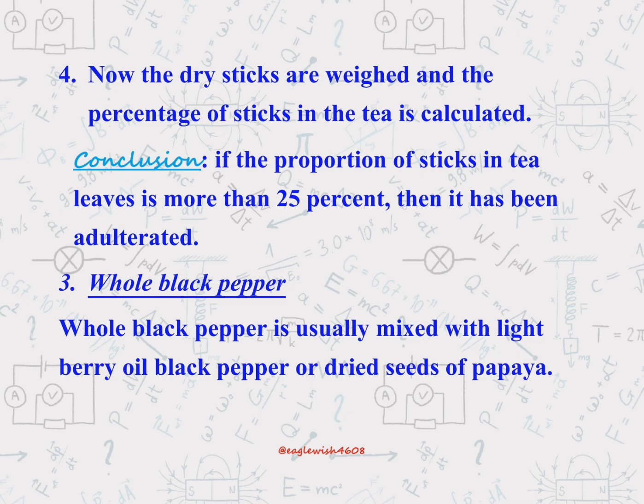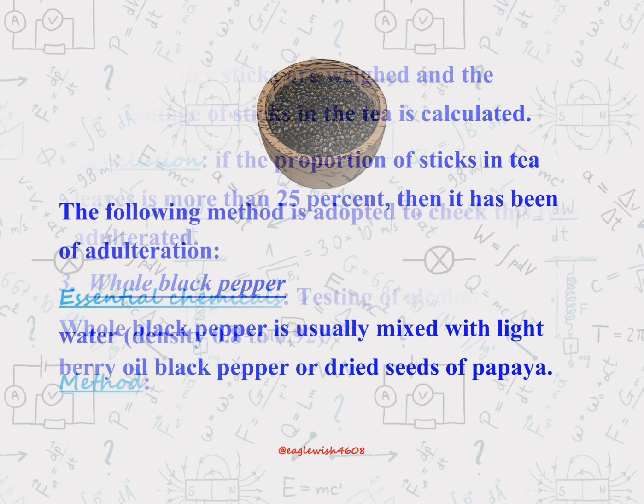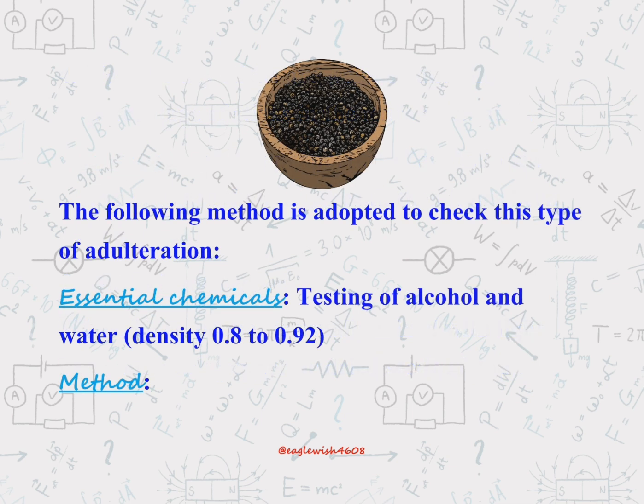Black pepper is another food item that is frequently mixed with dried papaya seeds. We'll write the procedure or chemical method to identify the adulteration with a simple chemical test.